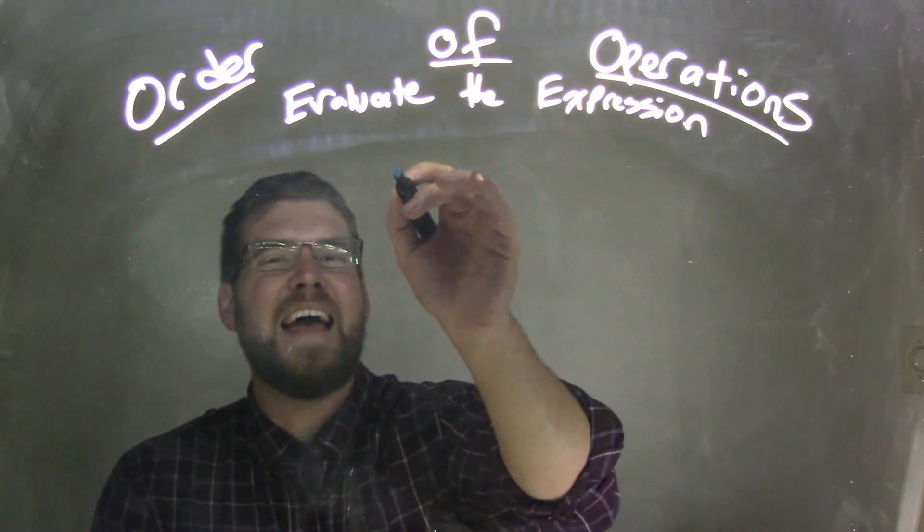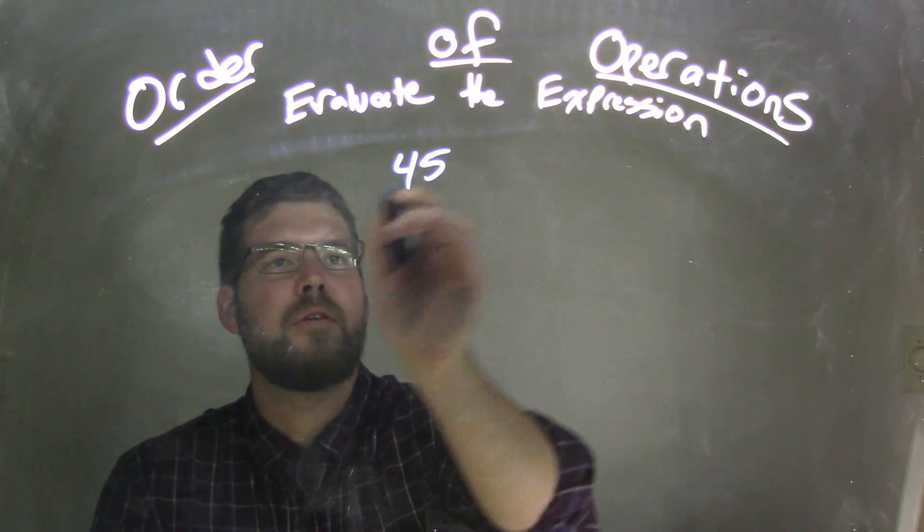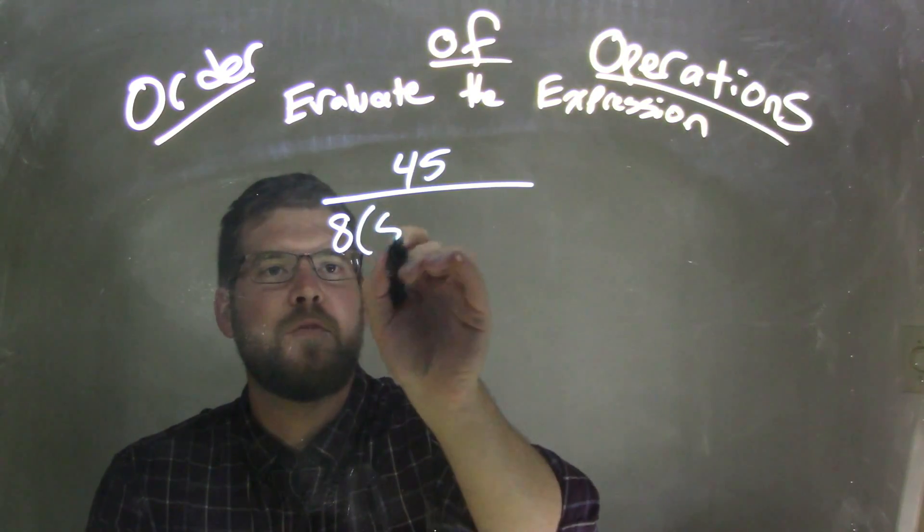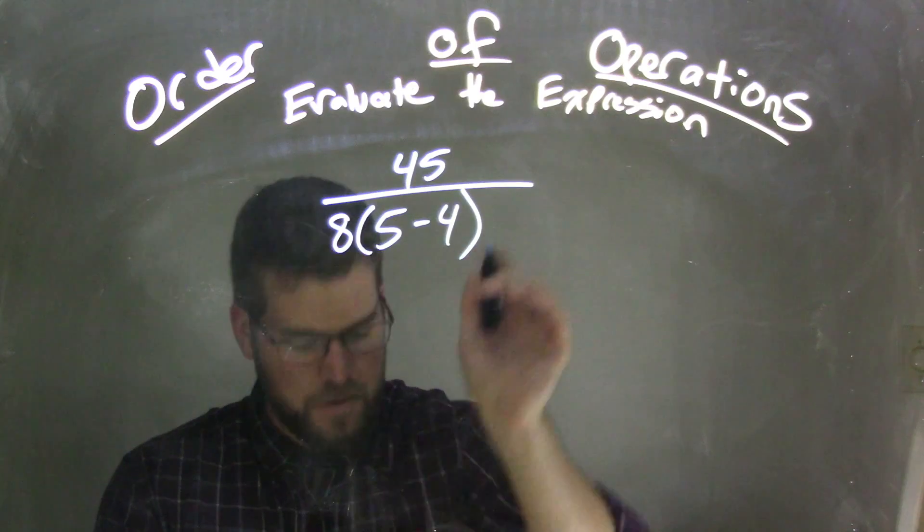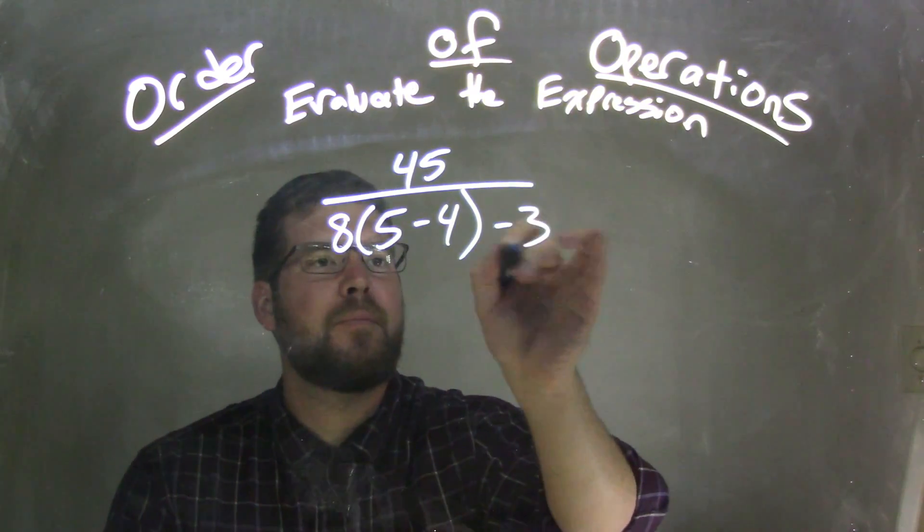If I was given this expression: 45 over 8 times 5 minus 4, minus 3.